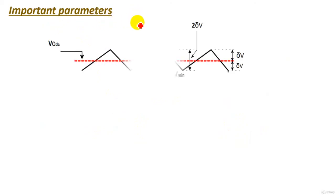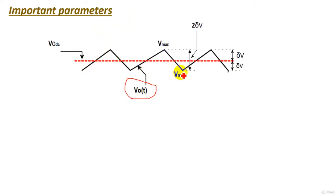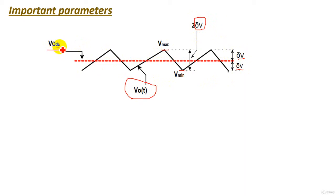Now let's look at the important parameters that identify the performance of the circuit. The simplified output waveform shows the voltage increasing and decreasing between a maximum and minimum value. The difference between maximum and minimum is called 2·ΔV, where ΔV is the ripple voltage. The average of this output voltage is called V_output(DC), or the DC output voltage, which is the high voltage DC applied to the insulator in the high voltage lab.